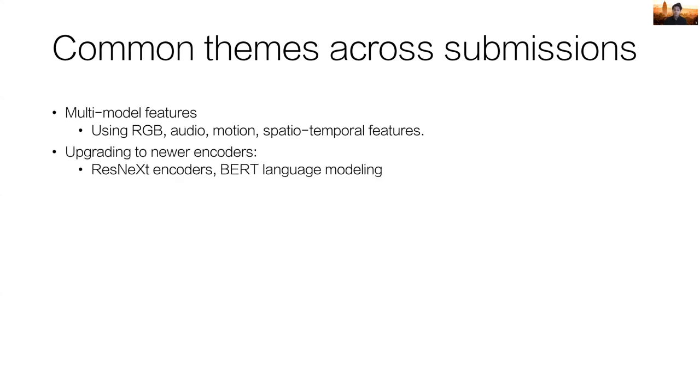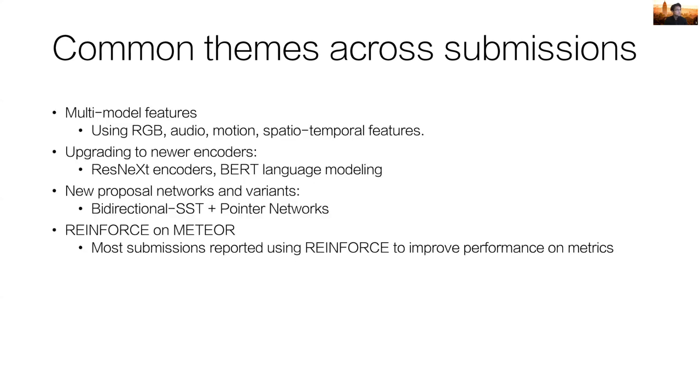Across all of our submissions, we saw some common themes. All top teams used multimodal features ranging from RGB motion to spatiotemporal features. The utilization of newer architectures and modules was also very common. There are multiple ResNext as well as BERT-based models. There were also newer bidirectional single-stream temporal action localization modules that were used. And a lot of the top teams also utilized pointer networks when generating captions. Reinforcement learning, just like last year, was also very common in the models that were proposed this year. And re-ranking of the generated captions to pick the most likely one was another commonly used technique across many different submissions.